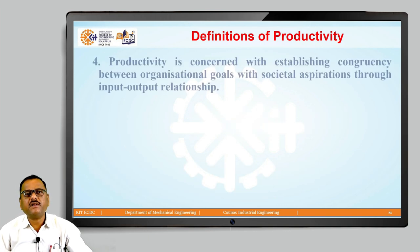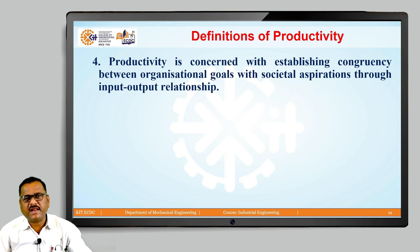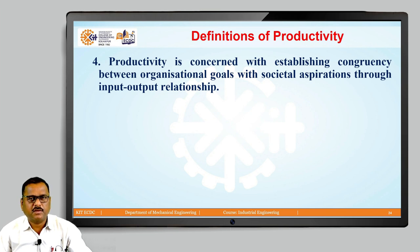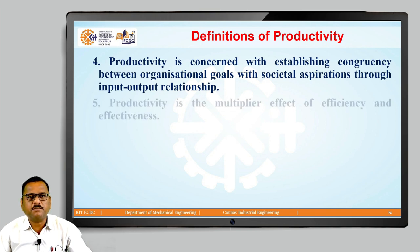The next definition of productivity states that productivity is concerned with establishing congruency between organizational goals and societal aspirations through an input-output relationship. Whatever we generate as output for society and how we generate it in relation to the different inputs used to produce that output — that defines the term productivity.